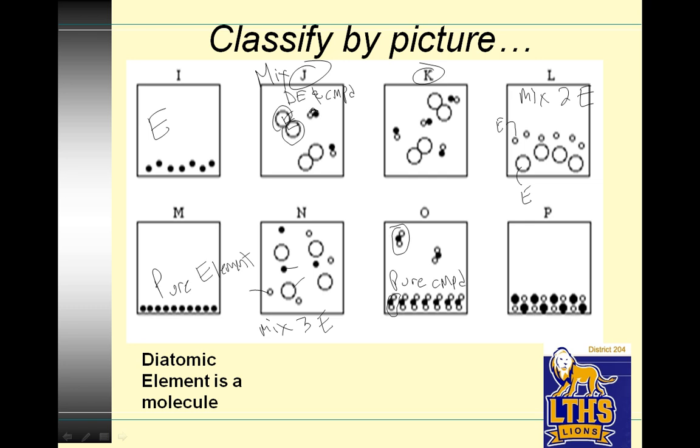Black dot, white dot, black dot, white dot, black dot, white dot. This is a mixture. And it is a homogeneous mixture because the mixture is even.